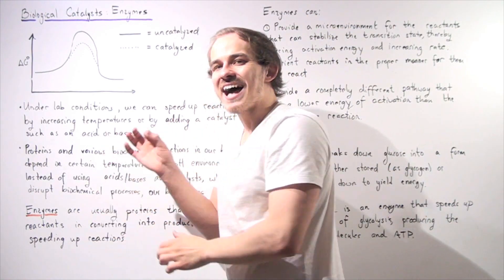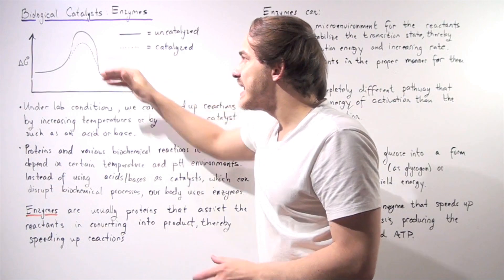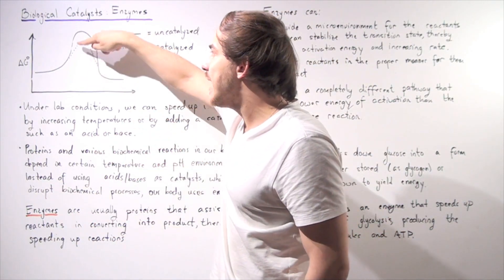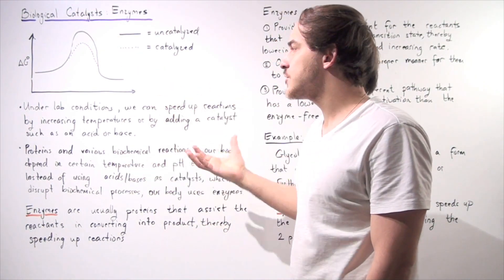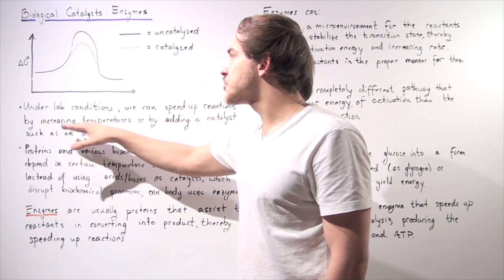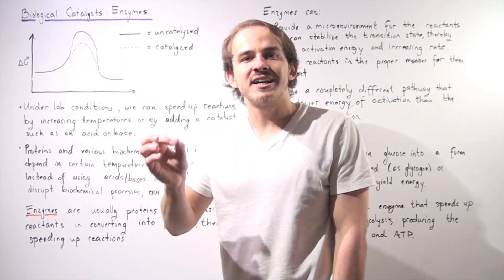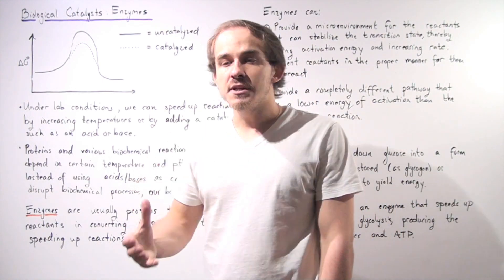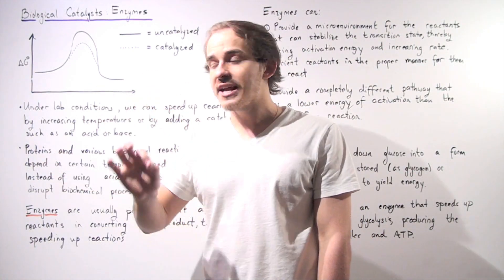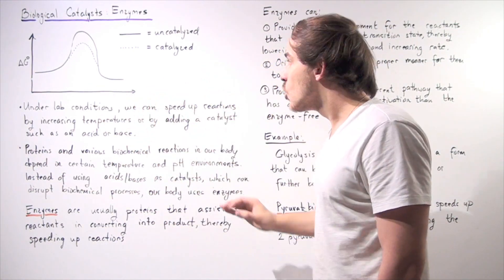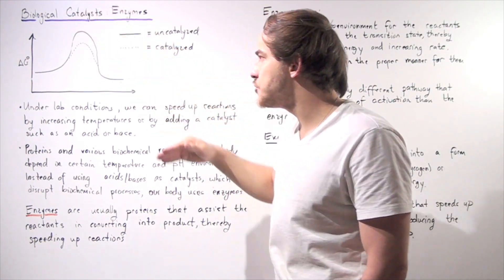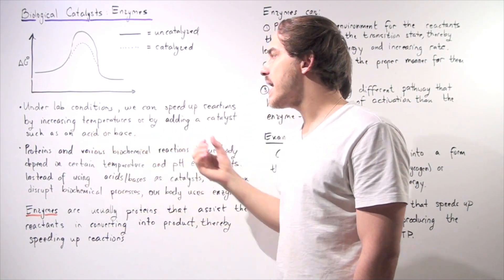Now under lab conditions, scientists can lower their transition state, speeding up reactions. Remember, the energy or the activation energy determines how quickly our reaction takes place. Scientists can either increase the temperature of reactions, thereby increasing the kinetic energy of reactants, and that means more reactants can overcome the activation barrier. Or they can also add a certain catalyst, which actually decreases the rate of reactions. It decreases the activation energy, and a catalyst is an acid or a base.